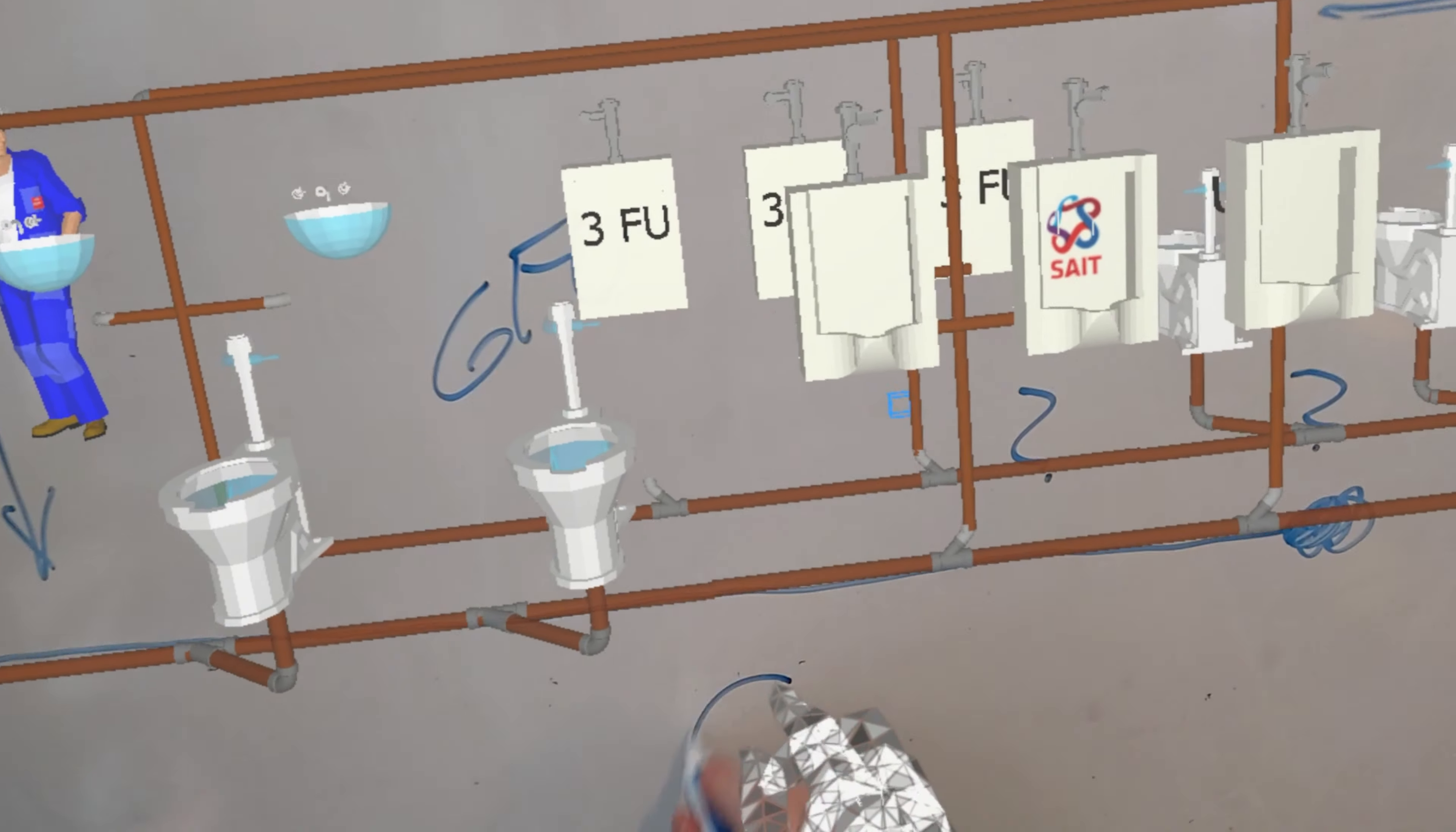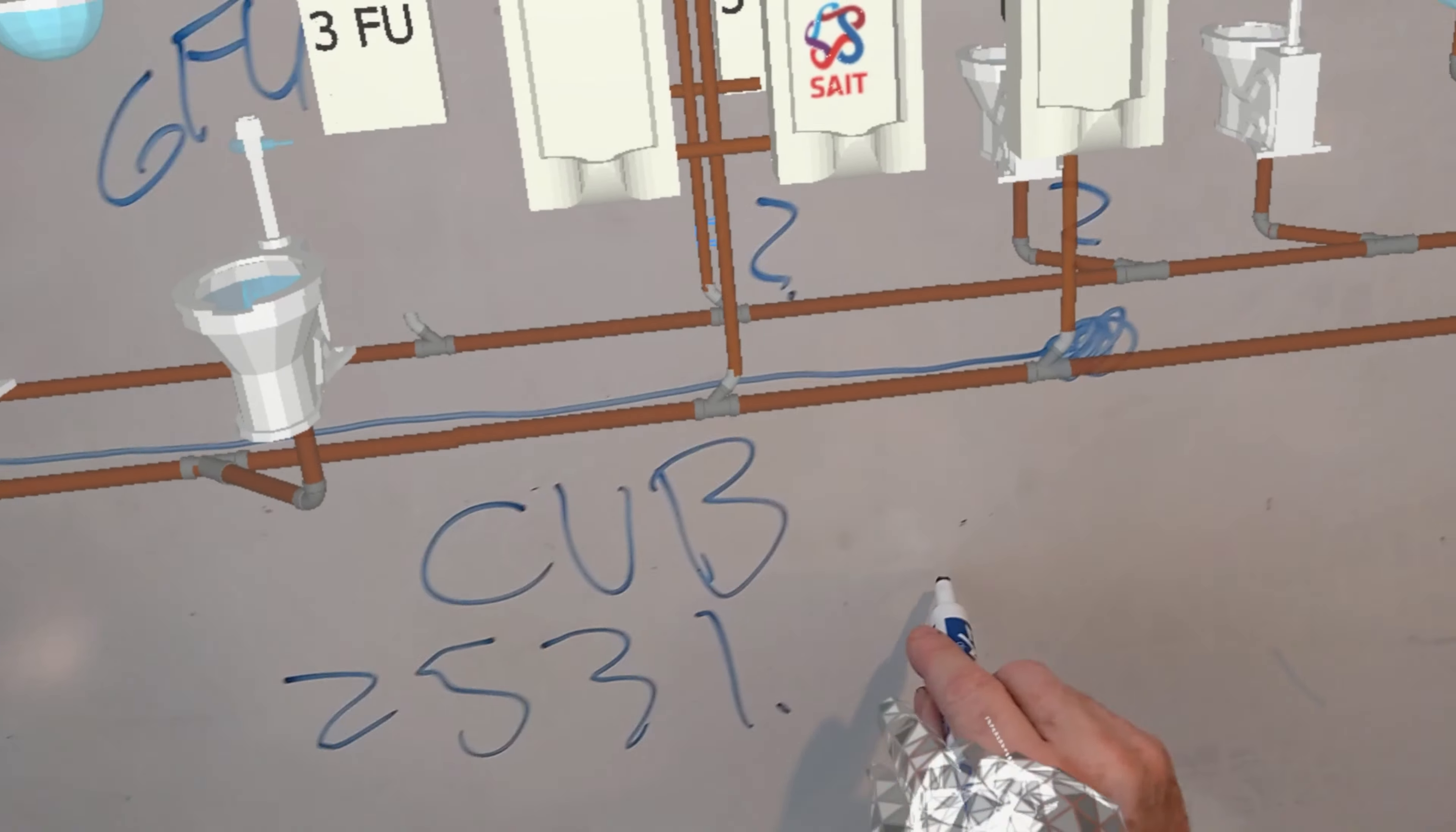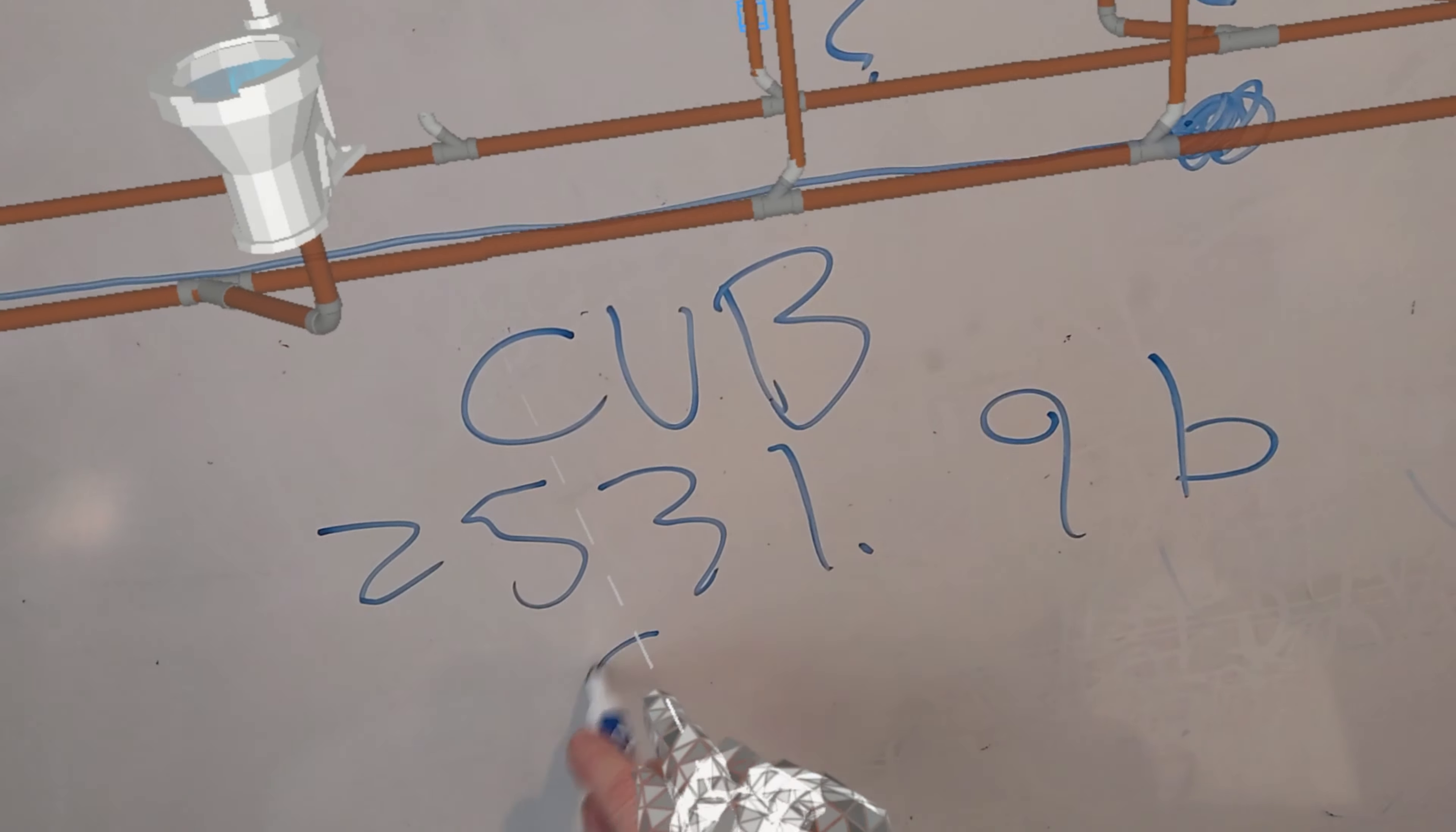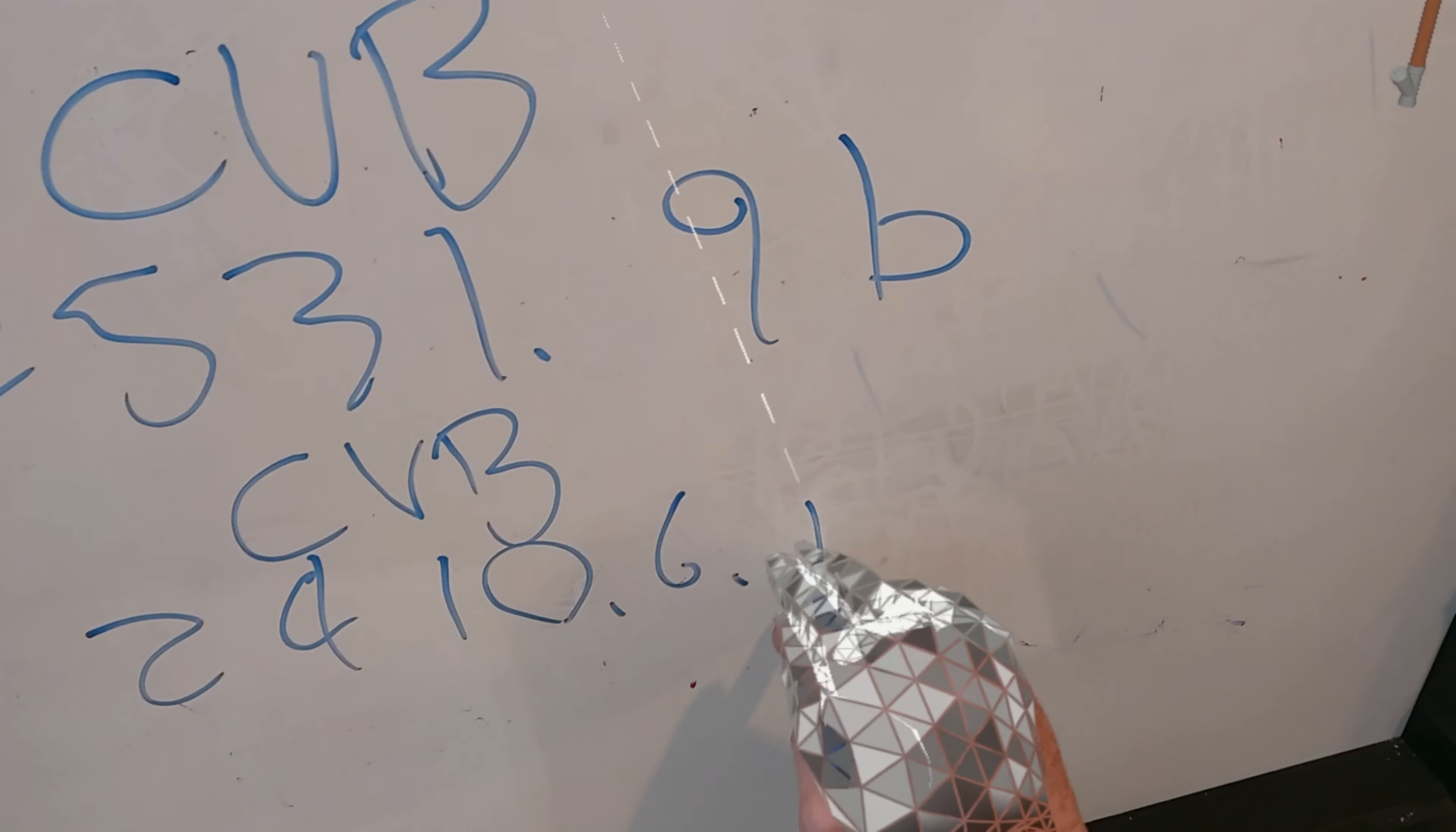And then of course the CVB, which is down here, is sized by 25319B. And also by the branch table, which we're going to call the circuit vented branch table. We're going to borrow the branch table, which is found in 24106B.